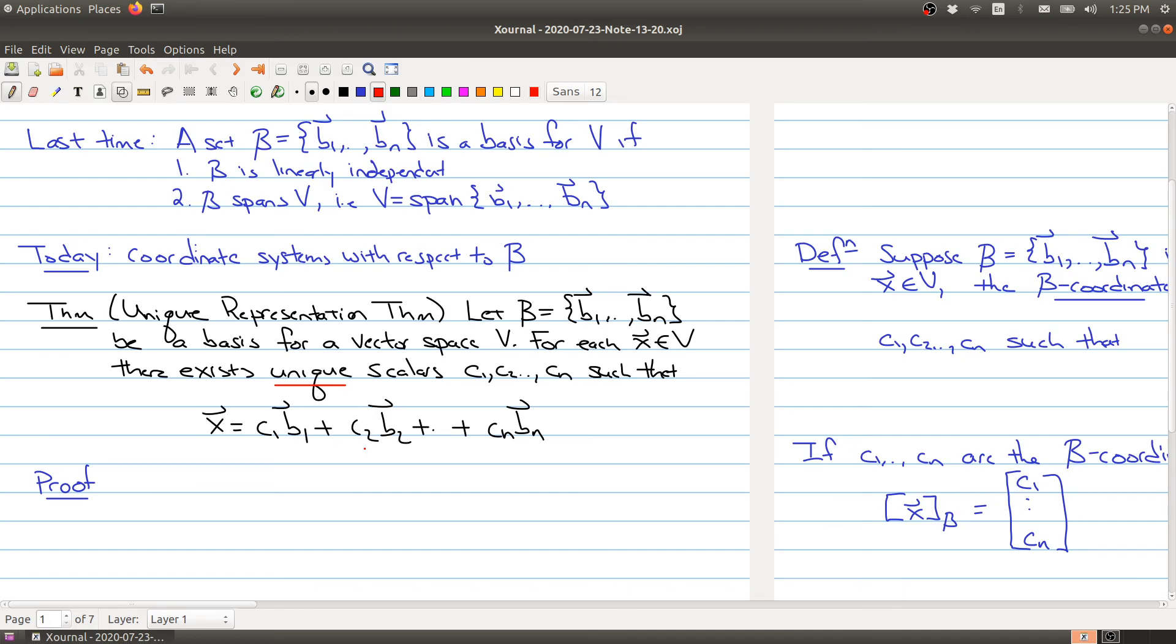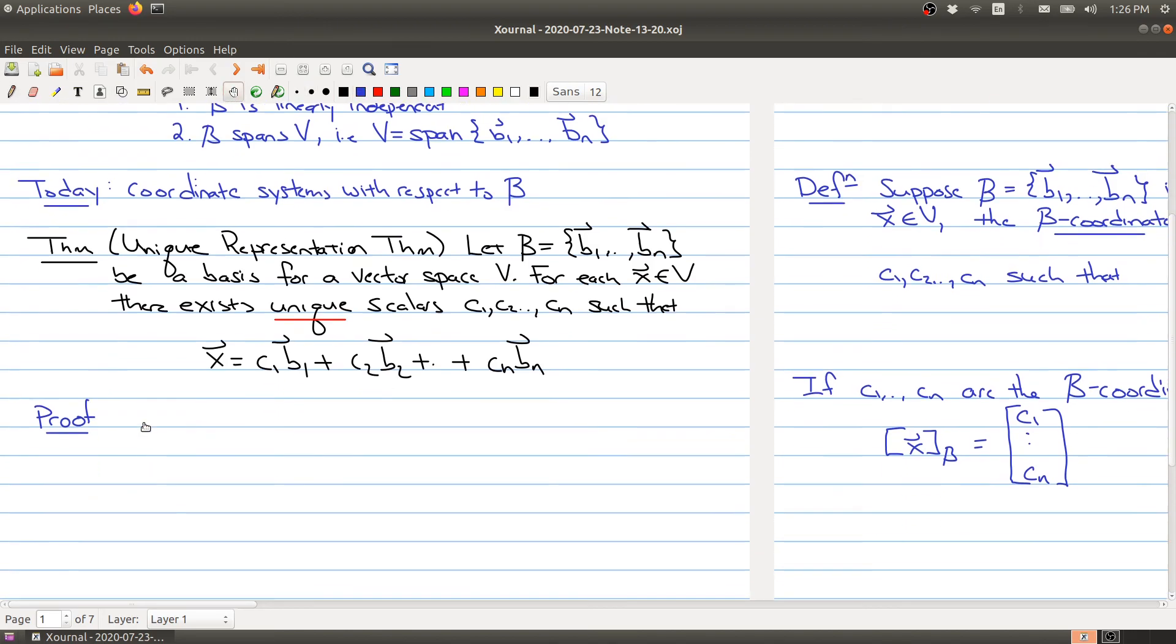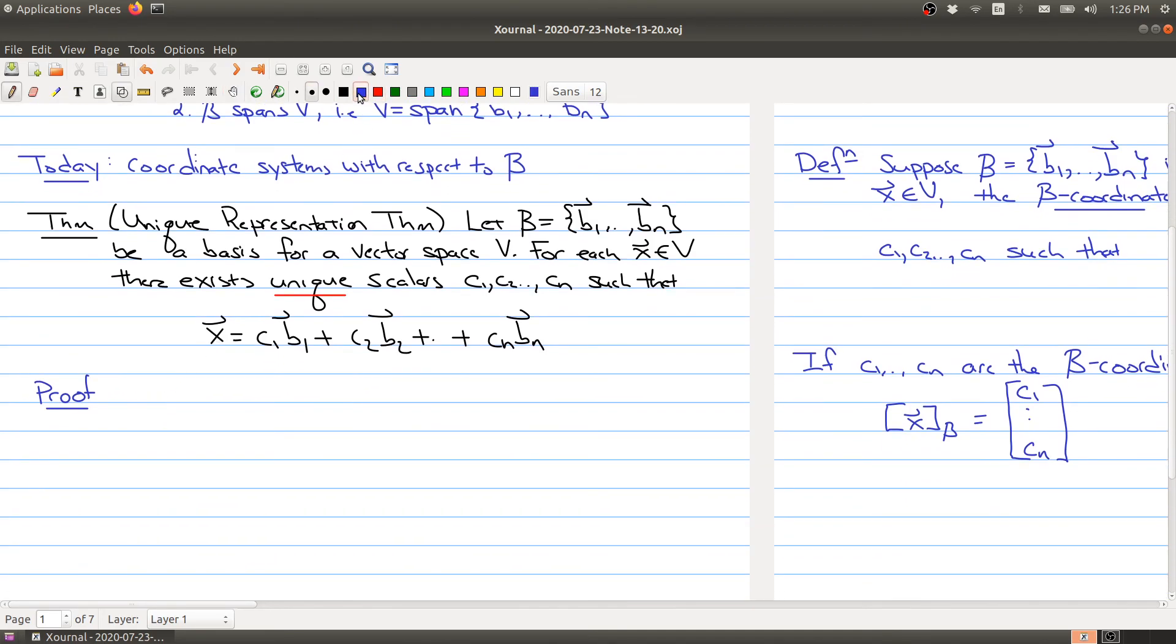So it's a very special result because it tells you that each x can be built uniquely in only one way from the vectors, from the vectors B, once you decide what your basis is. So let me walk you through the proof, and because this result is important for most of today's lecture, I think it's very important that we go through it.